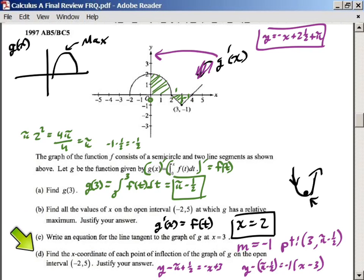If you have a great understanding of prime functions, this one is not that bad. D says find the x-coordinate of each point of inflection of the graph of G on the open interval negative 2 to 5. Justify your answer. Okay, now, we're going to use this graph right here because this is G prime. Now, the inflection points for G is going to be given to us by G double prime, right? G double prime will give us inflection points wherever the max and min are for the G prime function. So it's wherever this is switching directions.